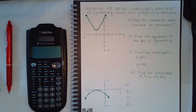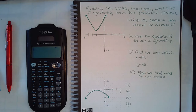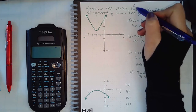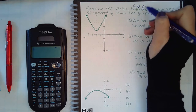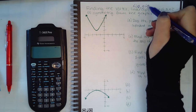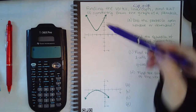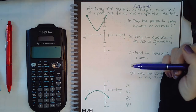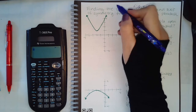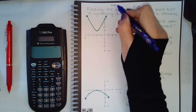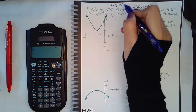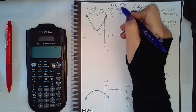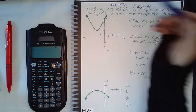This one is finding the vertex, intercepts, and axis of symmetry of the graph of the parabola. So we need to know what these things mean. Intercepts are your x-intercepts and your y-intercepts — where does it cross the x-axis and where does it cross the y-axis? Your vertex is going to be the peak or the valley, and you need to have the coordinates of that peak or that valley.